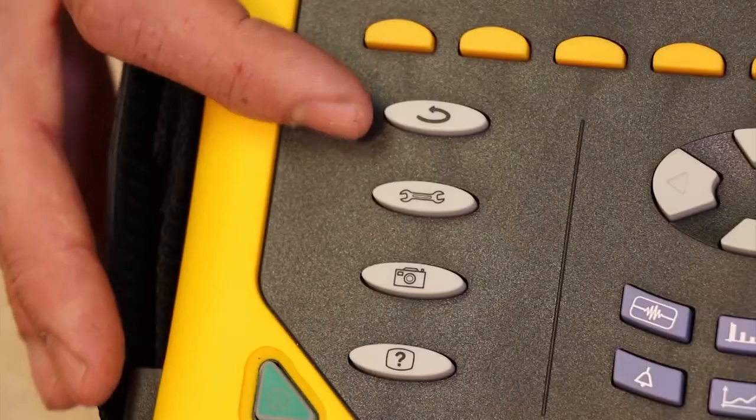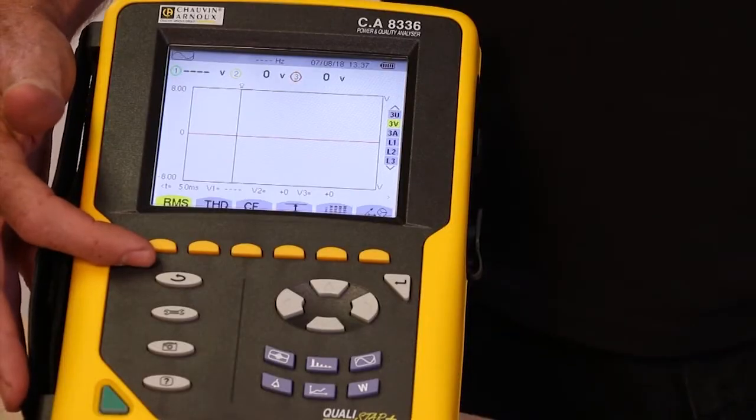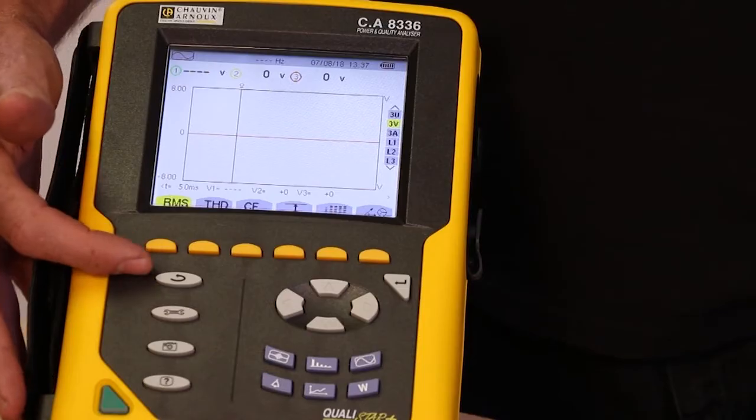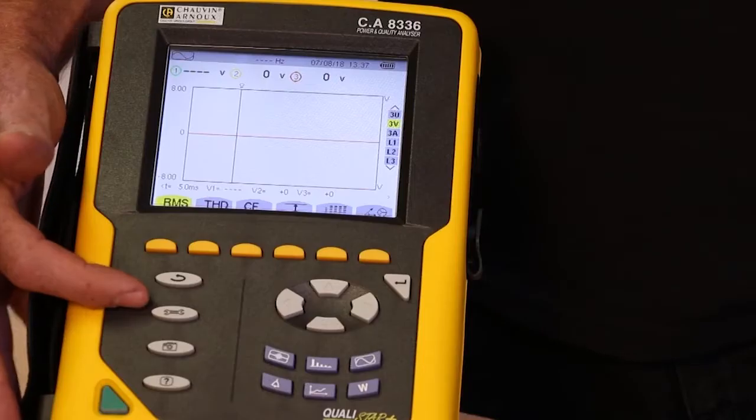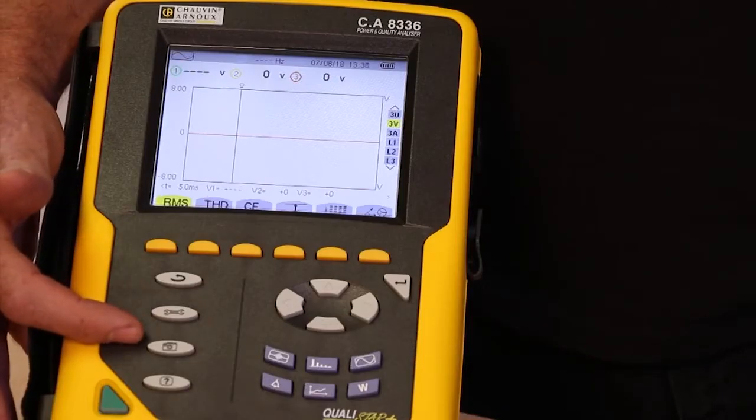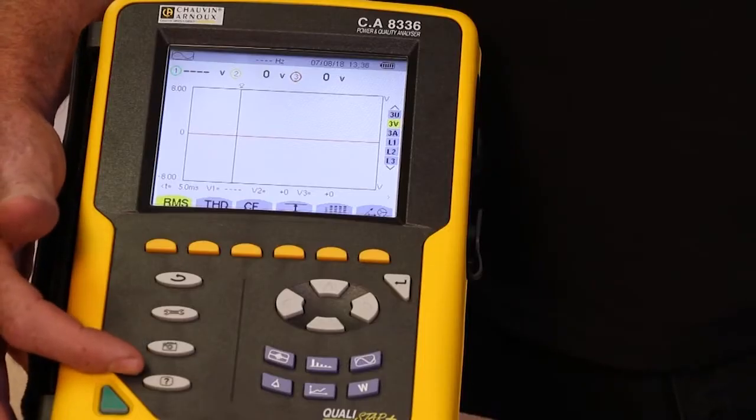On the left-hand side, there are four more keys. The top one takes you back up one level from any menu. The key with a picture of a spanner on it is a set-up key. The key with a picture of a camera on it enables you to take a screenshot at any point. And below that, there's a help key.